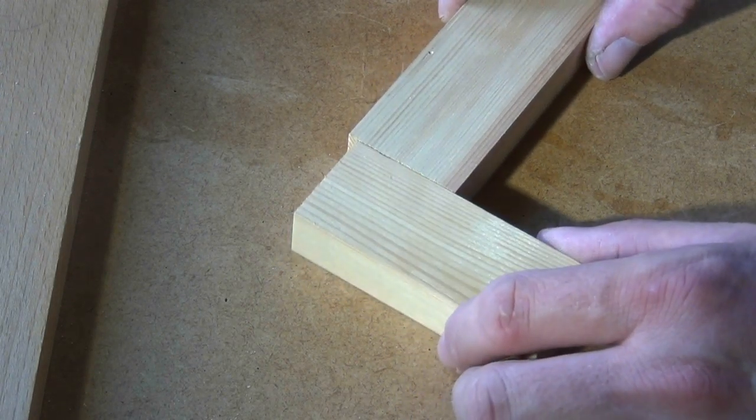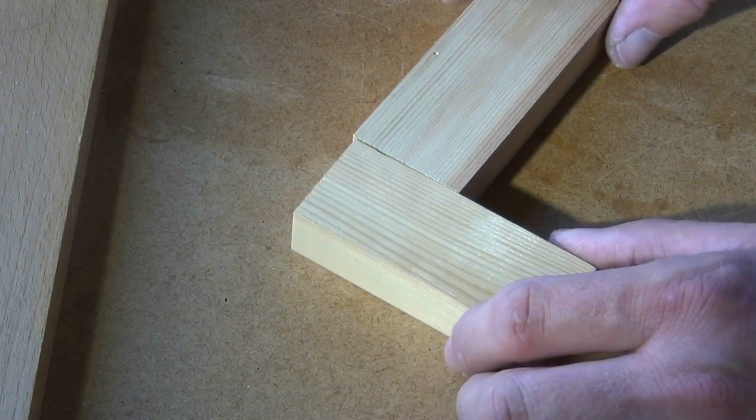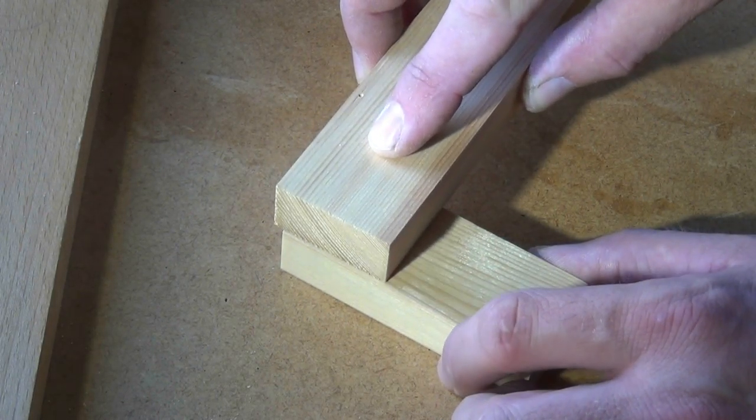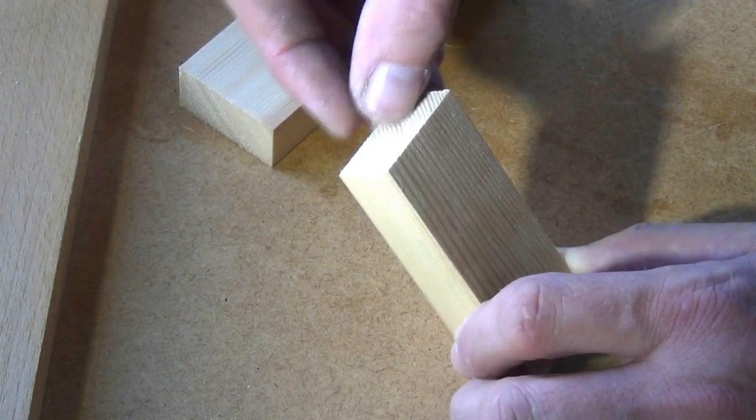I'll connect these two at right angles with a tenon on this piece sitting right through the middle of the other piece, and the mortise will be open on this end.